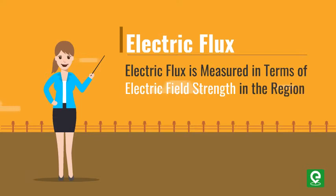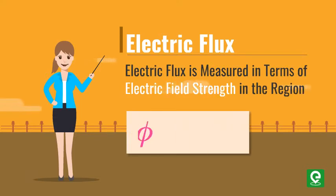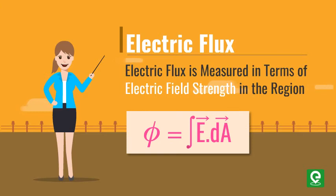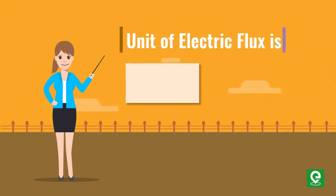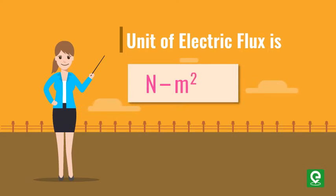Which is given by the relation Phi equal to integral E dot dA. Unit of electric flux is Newton meter square per coulomb.